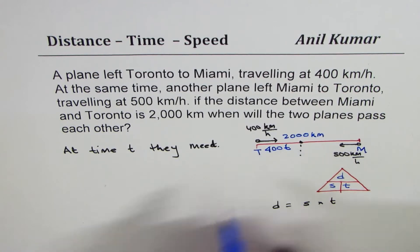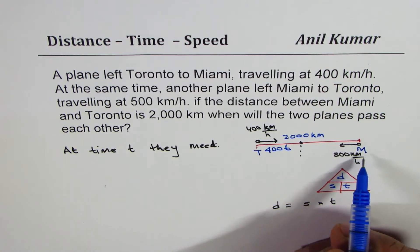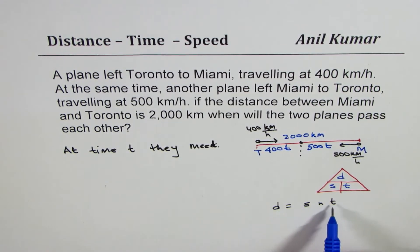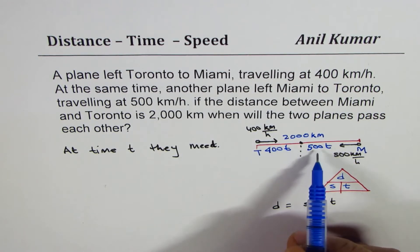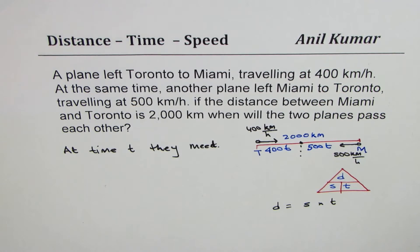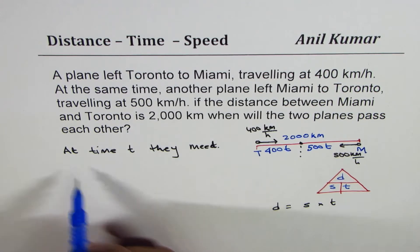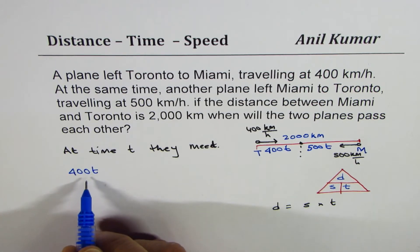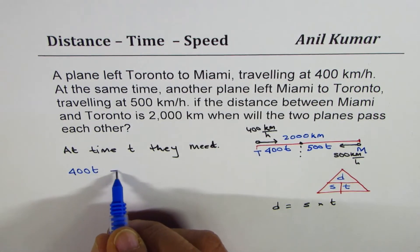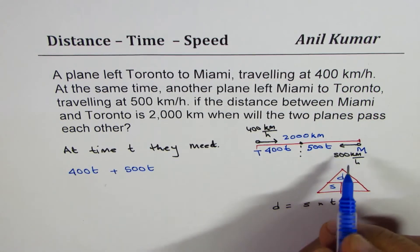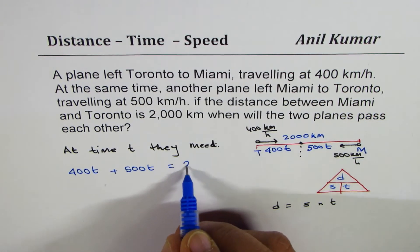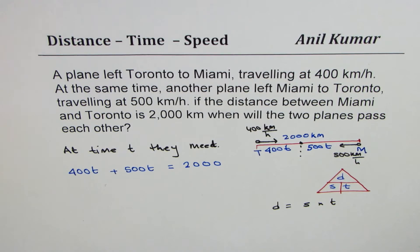So this distance will be 400t. The distance covered by the plane flying from Miami will be 500t — 500 is the speed and t is the time. The total distance has to be 2000, the distance between Toronto and Miami. So that makes our equation: 400t plus 500t equals 2000.